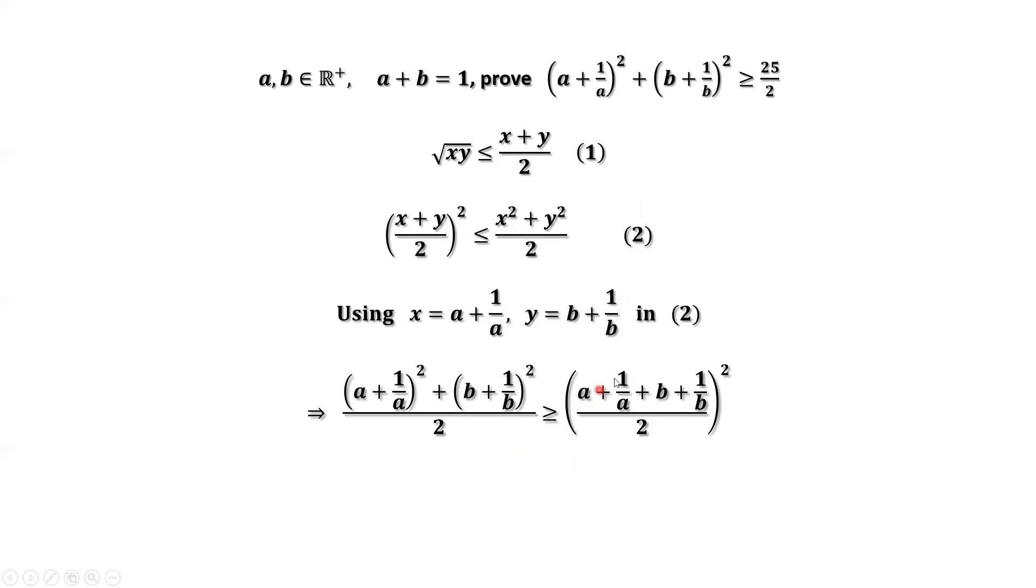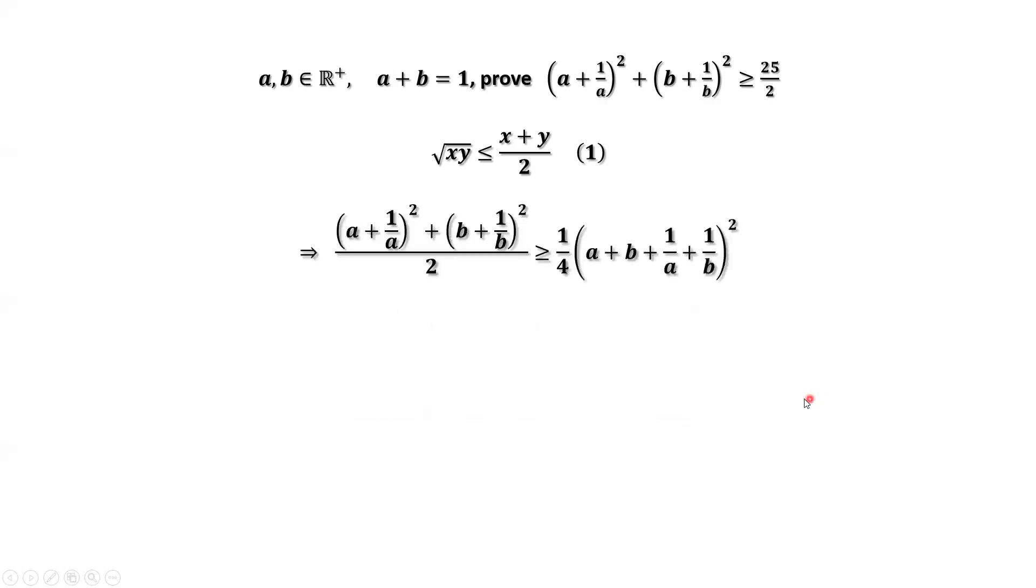Simplify the inside part of the right-hand side. a plus b from this given condition, which is 1. Now, consider the common denominator for the last two terms. We have the common denominator ab. The numerator is a plus b. A plus b is 1 again.